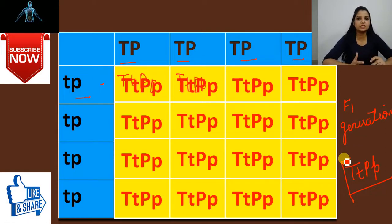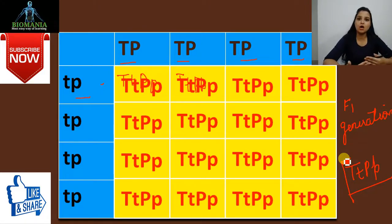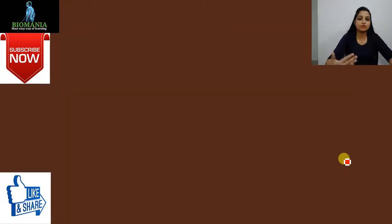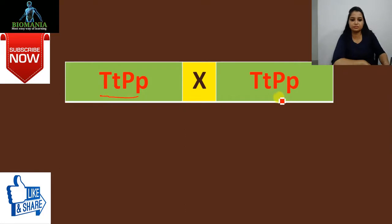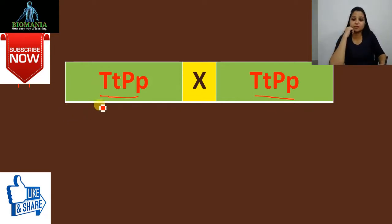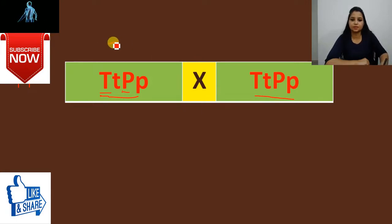Now when selfing occurs between the F1 generation progenies, we will get the F2 generation. During that cross we will see how alleles are independently assorting themselves. During gamete formation, let's look at how independent assortment happens. Here you can see the F1 generation progenies undergoing selfing. When selfing occurs, capital T will go independently with capital P.